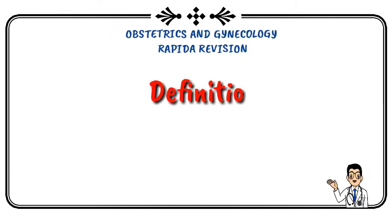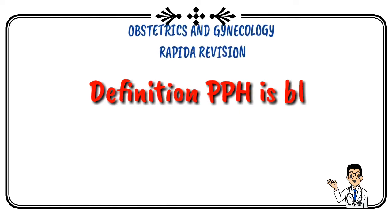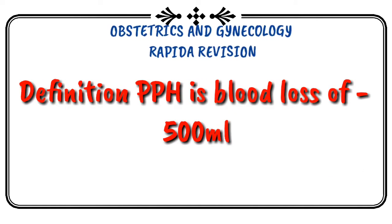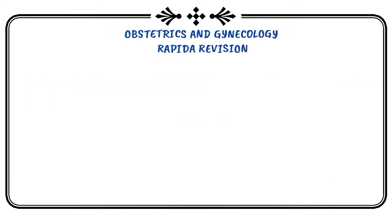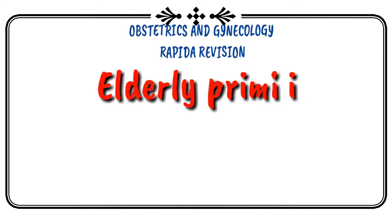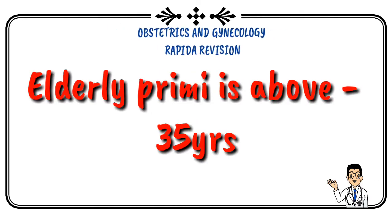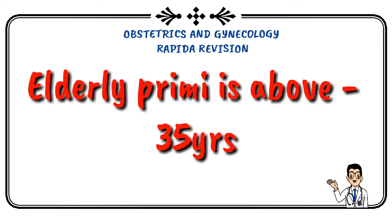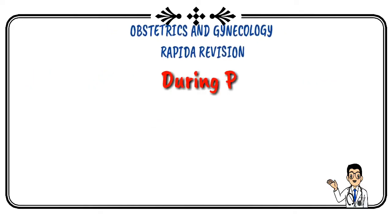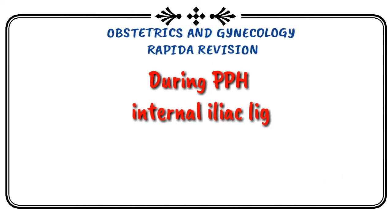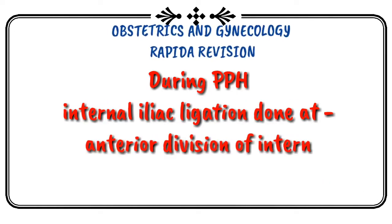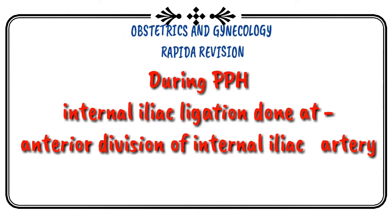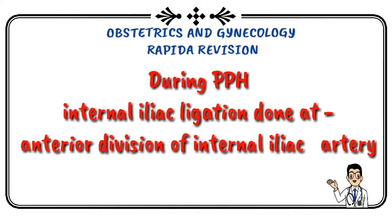Definitive PPH is blood loss of 500 mL. Internal iliac ligation is done at the anterior division of the internal iliac artery.